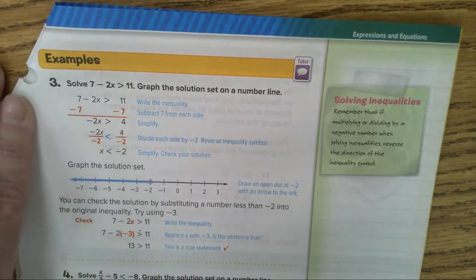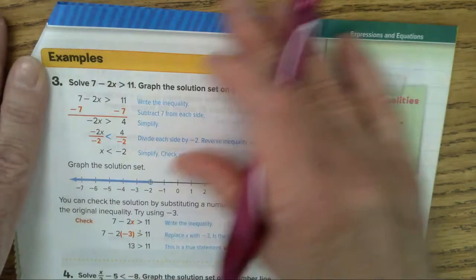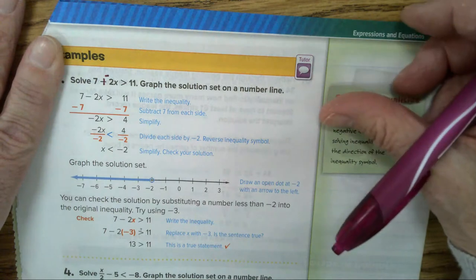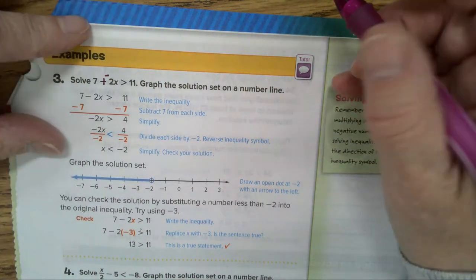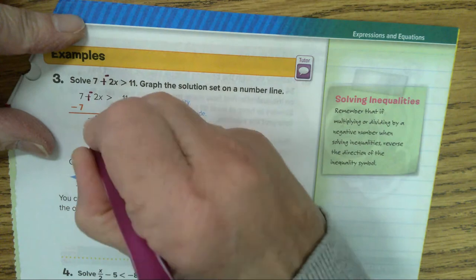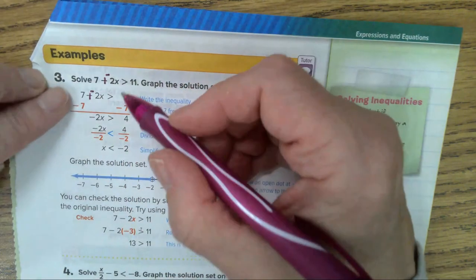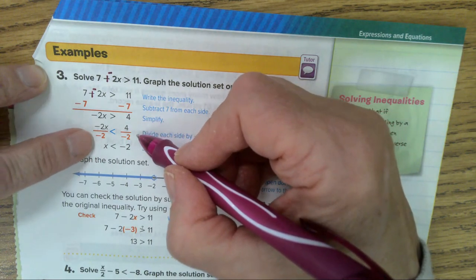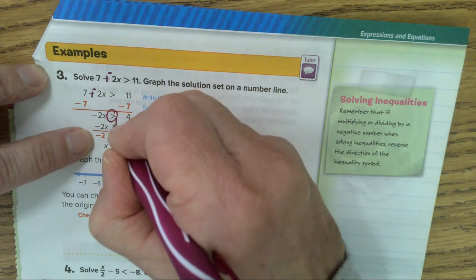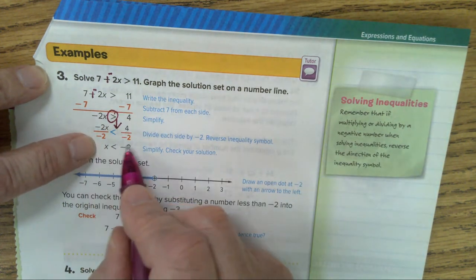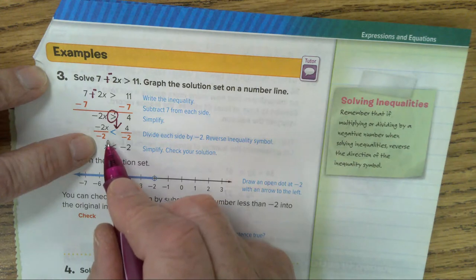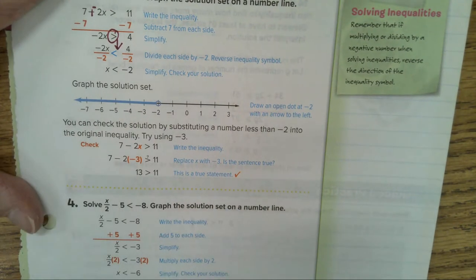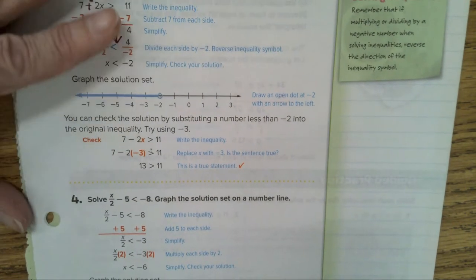In this problem, sometimes it's easier to add the opposite so you don't forget you have a negative sign. Now they have the negative 2x. First you get rid of your seven, minus seven, then you divide both sides by negative two. Look what happened to your inequality sign. When you divide both sides by a negative, your inequality sign flips. X is less than negative two, open circle going to the left.